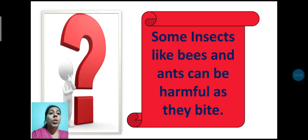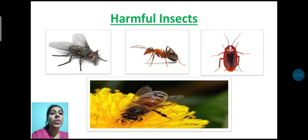Do you know students? Some insects like bees and ants can be harmful as they bite. Kuch insects जैसे honeybee और ant harmful हो सकते हैं क्योंकि वे हमें काट जाते हैं. So harmful insects are housefly, ant, cockroach, honeybee. These are harmful insects. So we should stay away from these insects.